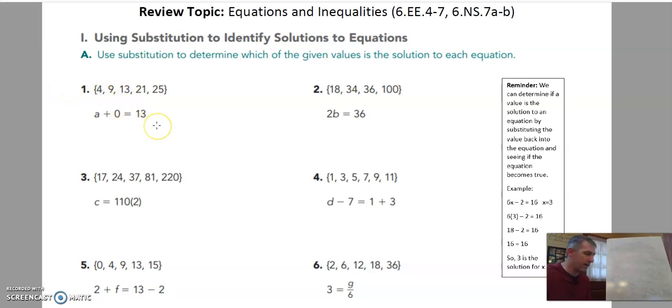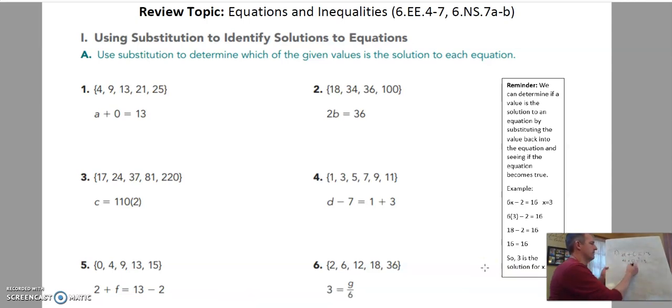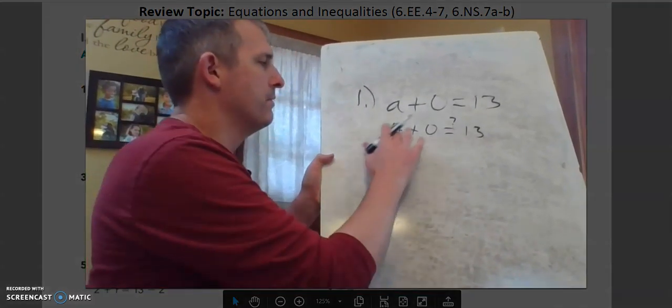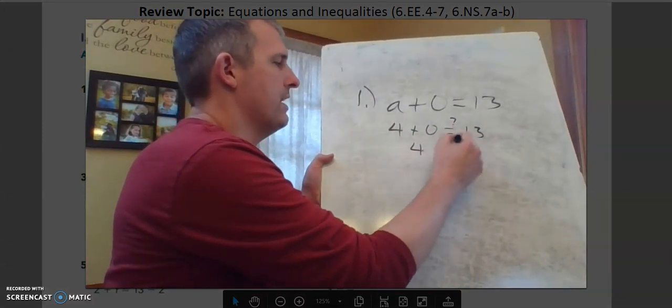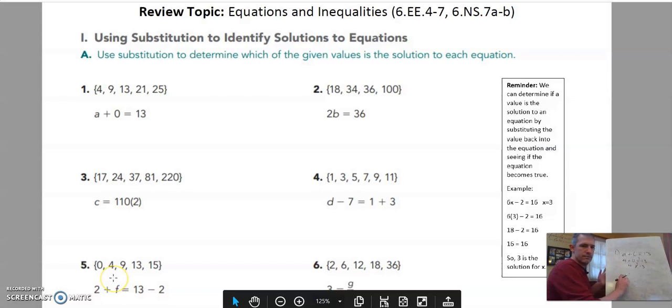Let's take a look at number one. Basically what we're doing is checking to see if I put in any of these numbers from this set—that's what we call this inside the braces, it's just a set of numbers. So if I look at this set of numbers: 4, 9, 13, 21, and 25, which if any of them make this equation true? If I have a and I add zero, I get 13. Let's think about this. If I put in 4, and I do 4 plus 0, will that equal 13?